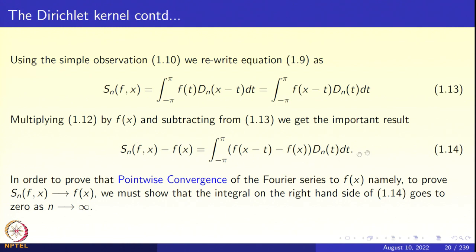Equation 1.14 is going to be the crucial point in the proof of the pointwise convergence theorem. To prove S_n(f,x) → f(x), we need the integral on the right-hand side of 1.14 to go to zero as n → ∞. Let us examine whether and how this integral goes to zero.